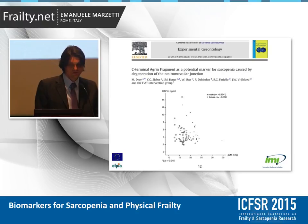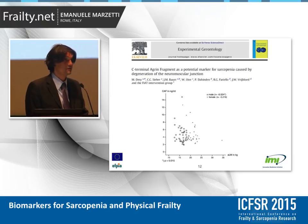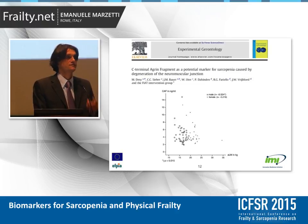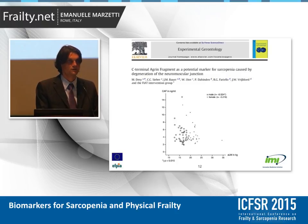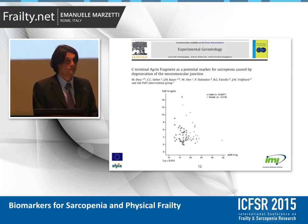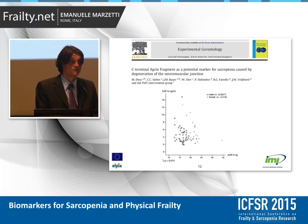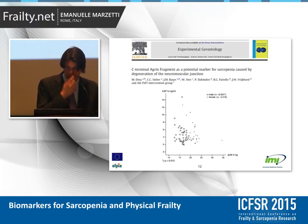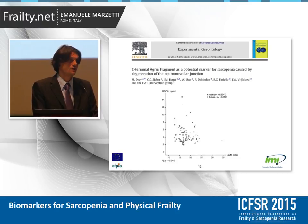More important is the C-terminal agrin fragment, or CAF — a biomarker that has been studied quite actively over the past few years. CAF is a C-terminal fragment of agrin, probably necessary for the assembly of the synaptic apparatus at the neuromuscular junction. Excessive denervation, marked by increased levels of CAF, is a sign of neuromuscular degeneration, fiber degeneration, and fiber atrophy. We know that denervation is one of the most important pathogenetic mechanisms underlying sarcopenia.